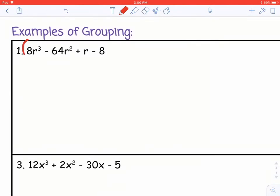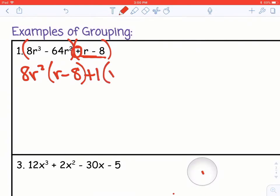So we want to group the first two and the last two terms and then take out a GCF from each of those parentheses. So out of the first two terms I could take out 8r squared and then I would have r minus 8 left over. And out of the second two terms, the second group, I could take out a positive 1 because that's all they have in common. And then r minus 8 would be left over.